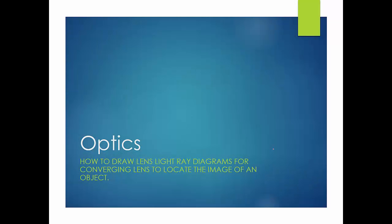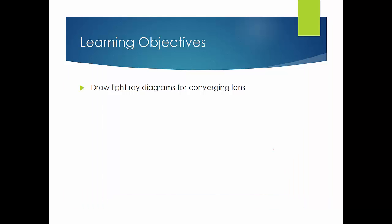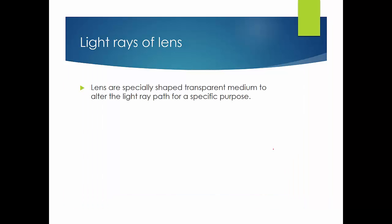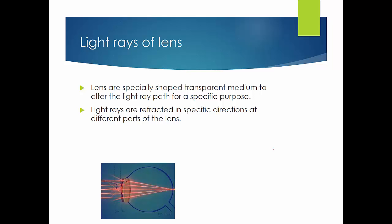In this optics lesson, we are going to learn how to draw a light ray diagram for a converging lens to locate the image of an object. These are the learning objectives. Lenses are specially shaped transparent media that alter the light ray path for a specific purpose, and light rays are refracted in specific directions at different parts of the lens to achieve that purpose.